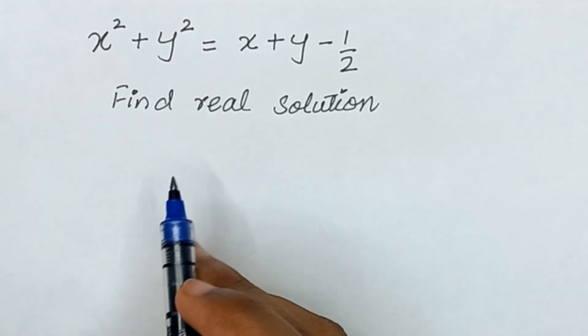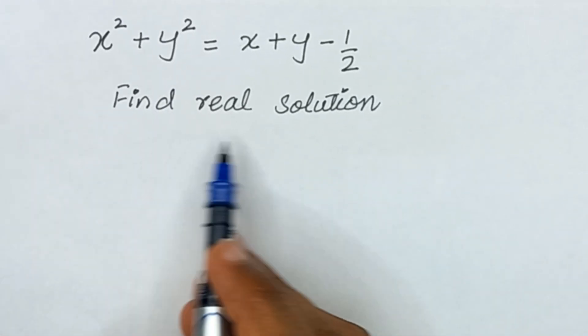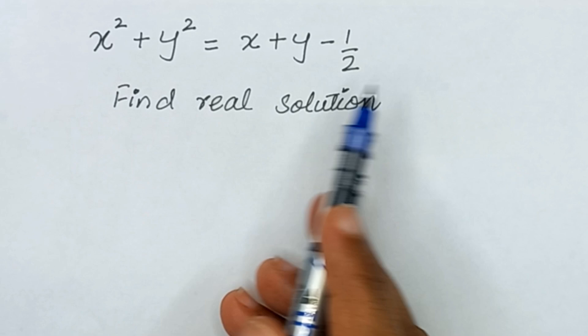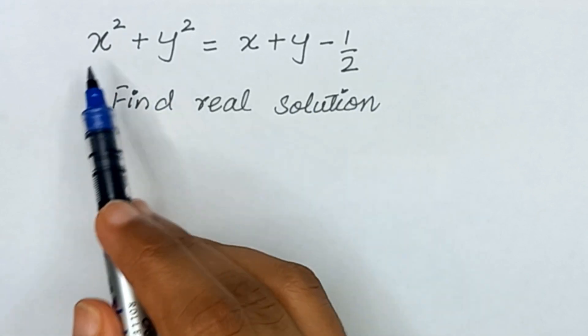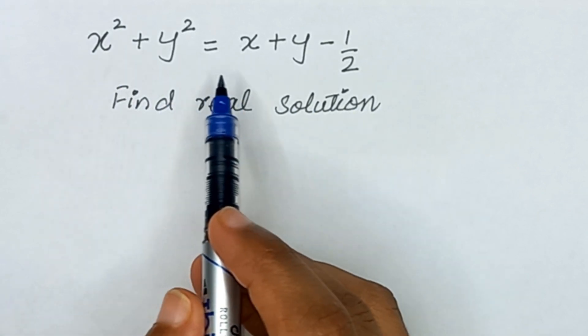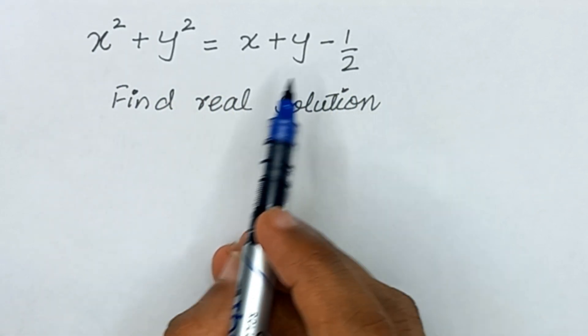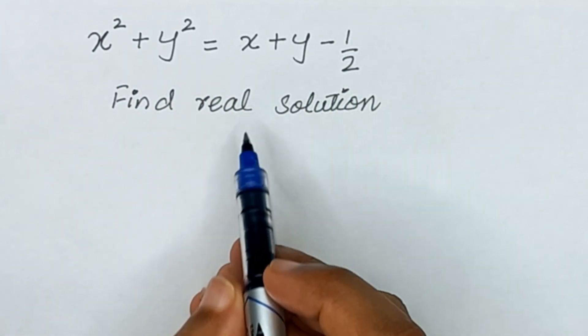Hello friends. In this video we will find the real solution from this given equation: x² + y² is equal to (x + y - 1) / 2.